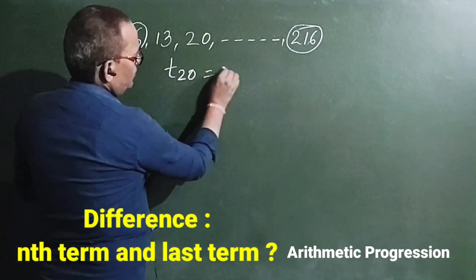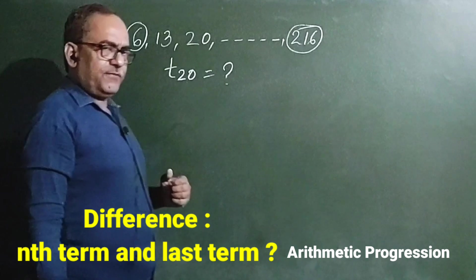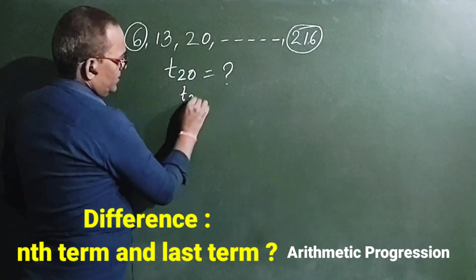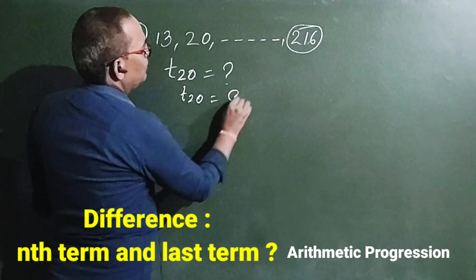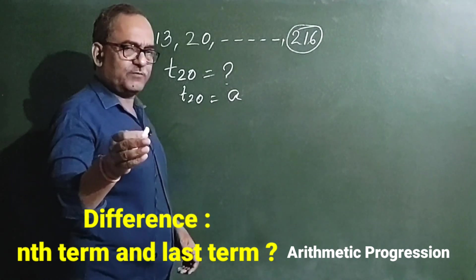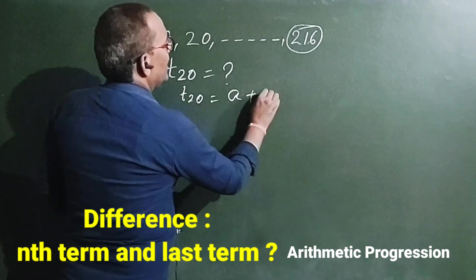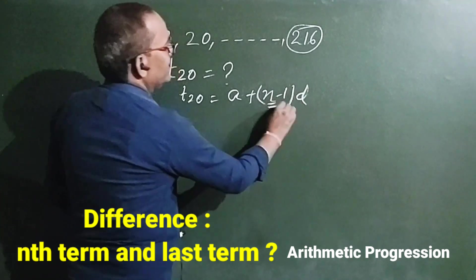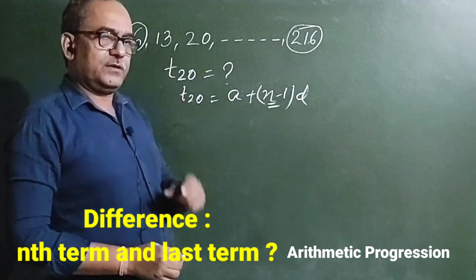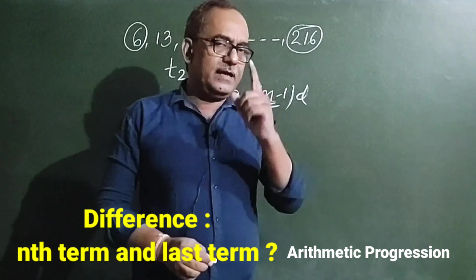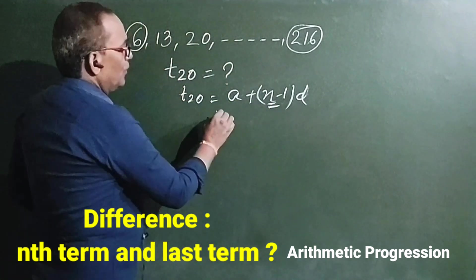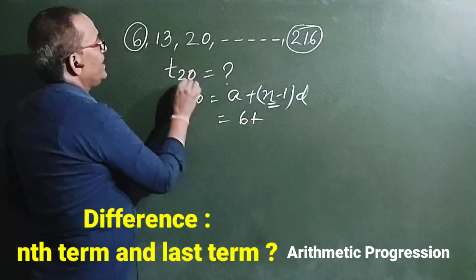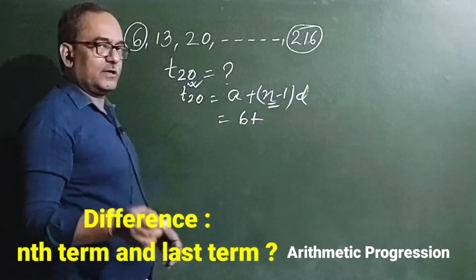So how can we find the 20th term? T20 is equal to A — that is the first term of the arithmetic progression — plus (n minus 1) into D, where n is that particular term we have to find. Here n is 20. So we write A = 6, n = 20. This gives us the 20th term.